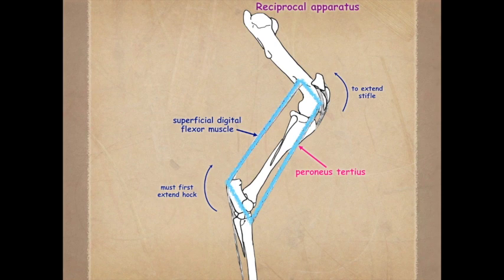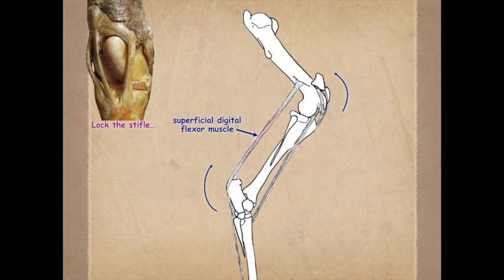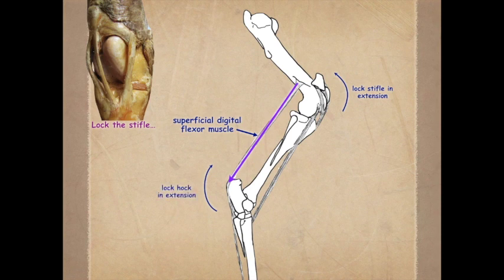In the hind limb, the movements of the stifle and the hock, as well as the fetlock joints, are coupled so that these three joints flex and extend in synchrony due to the action of this reciprocal apparatus. In the horse, we are able to lock the stifle by using the vastus medialis to bring the patella into the resting position, which locks it up over the medial ridge of the trochlea. Once we have locked the stifle, that's fixed in extension, and that's going to cause locking of the hock in extension. This is part of our stay apparatus.